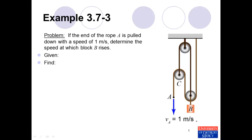Once we read the problem statement, we look at the associated figure and try to make sure we understand what's happening. We see that point A is being pulled down with a given speed. We identify what we're given: VA is equal to 1 meter per second. And we want to determine the rate at which block B rises. Particle A and mass B are connected via this system of ropes and pulleys, so this is what we classify as a dependent motion problem. Because of this physical connection, the motion of block B is going to be related to the motion of block A.